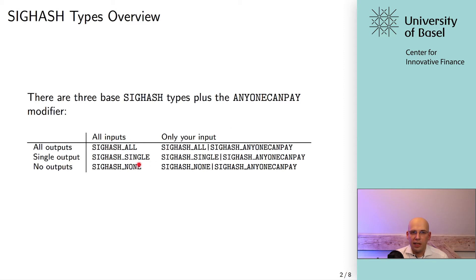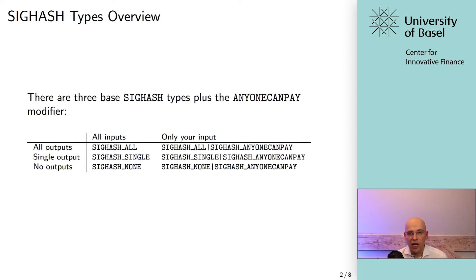SIG hash SINGLE essentially means you're still signing all of the inputs, but you're only signing a single output. The other outputs, if there is value left, someone else could create a new one or change another one. It's just one output you're signing along with all the inputs, but the other outputs could be changed or freely added.